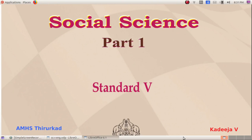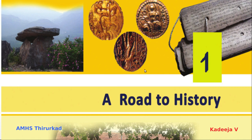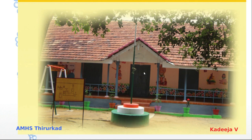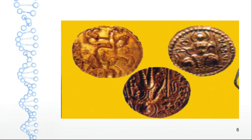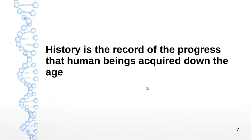Social Science Part 1, Standard 5, Chapter 1: A Road to History. In the last class we discussed how to make a school history. We realized that history writing has to collect information from the past. Written records, old fashioned objects and buildings are all records of history. History is based on such evidence — it is the record of the progress that human beings have made down the ages.